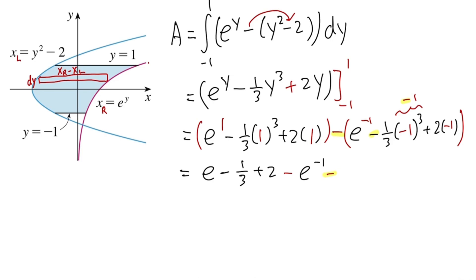And we have 1 third. And lastly, 2 times negative 1 is negative 2. But again, we have to distribute this negative. So altogether, we have positive 2. Alright? And then now let's just put things together.